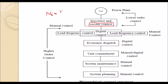Speed is related to frequency by the formula: N = 120F / P. Since the number of poles is constant, if frequency changes, speed also changes. Therefore, frequency must be controlled and maintained constant. Load frequency control (LFC) is used for this purpose — both digital control and manual control are available as two types of load frequency control.